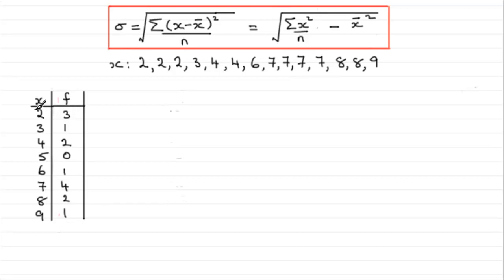So, for instance, the 2 here occurred 3 times in the list, 1, 2, 3. The 5 didn't occur at all. There's no 5 in there. And so on.